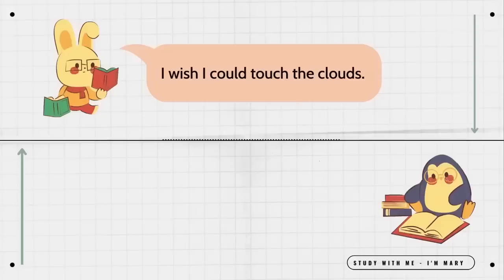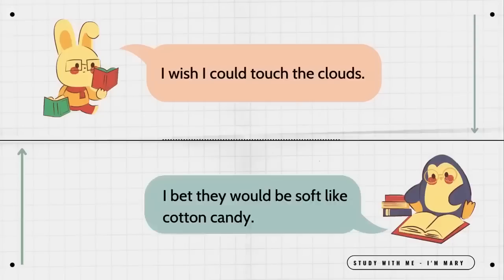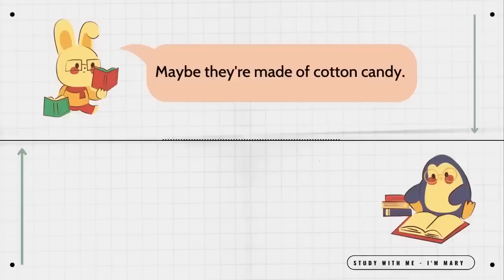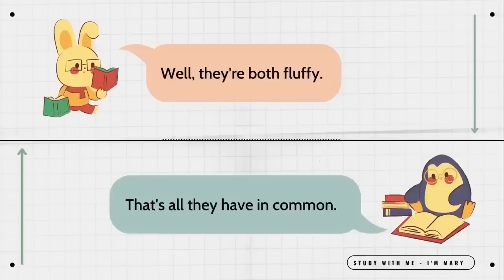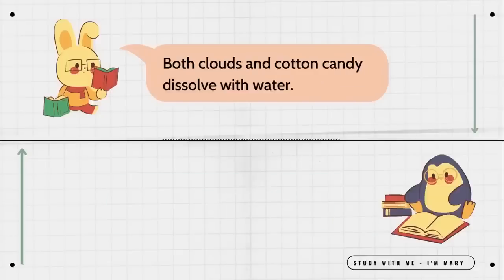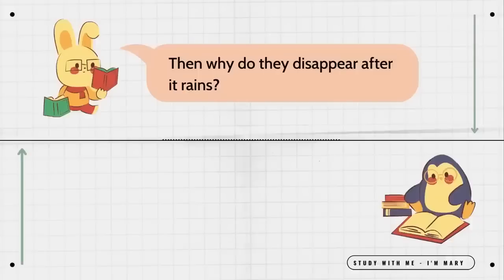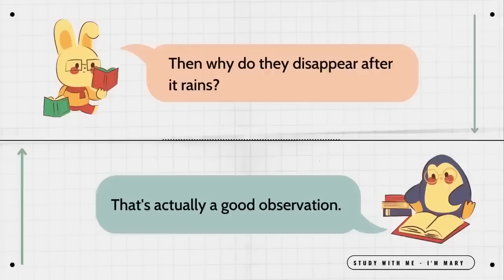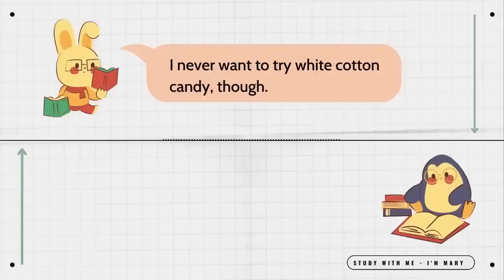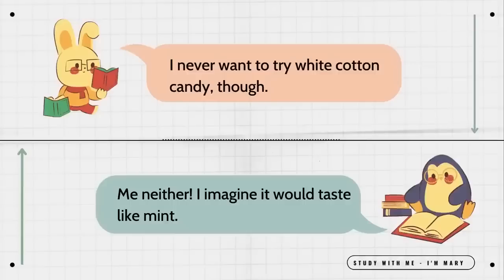I wish I could touch the clouds. I bet they would be soft, like cotton candy. Maybe they're made of cotton candy. That's impossible. Well, they're both fluffy. That's all they have in common. Both clouds and cotton candy dissolve with water. Clouds don't dissolve with water. Then why do they disappear after it rains? That's actually a good observation. I never want to try white cotton candy, though. Me neither. I imagine it would taste like mint.